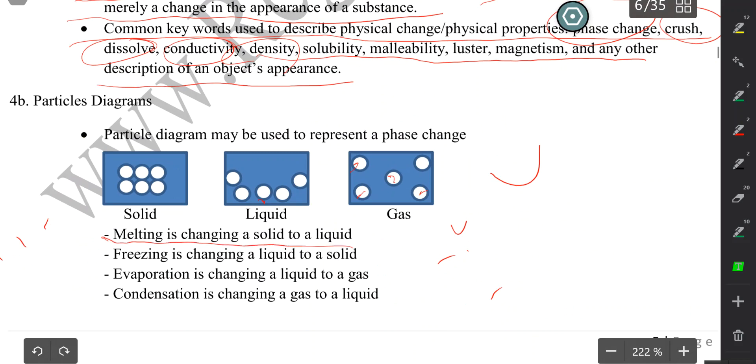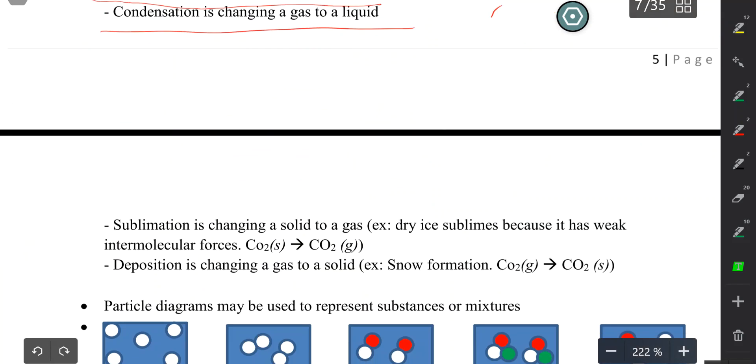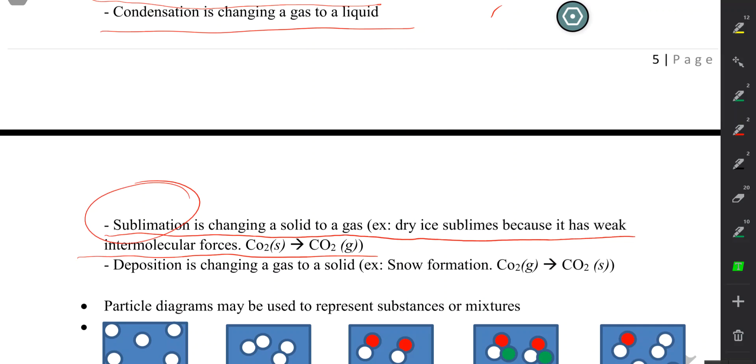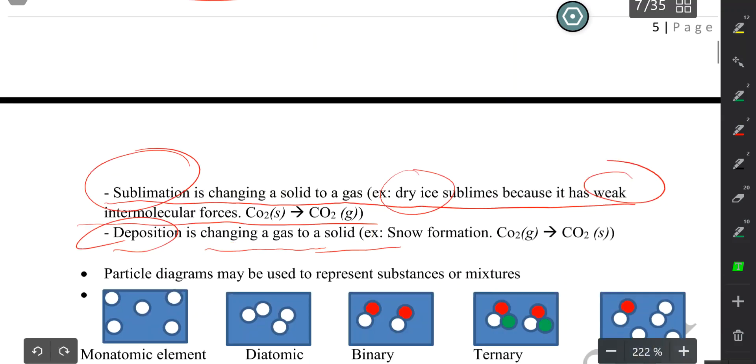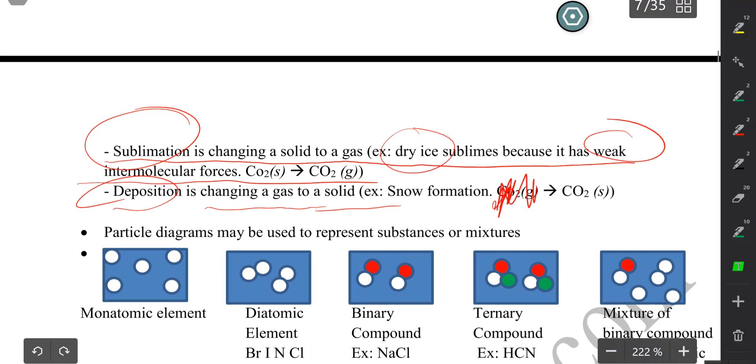You can read this. Very important that we know that sublimation only happens to substances that have very weak intermolecular forces, such as dry ice. Deposition is actually changing gas to solid directly, and that happens whenever it snows. Disregard this.